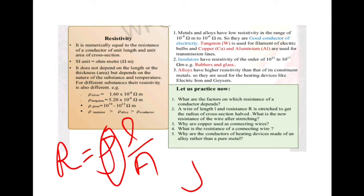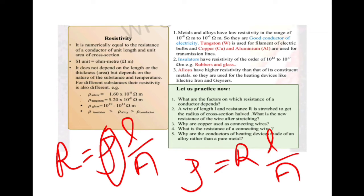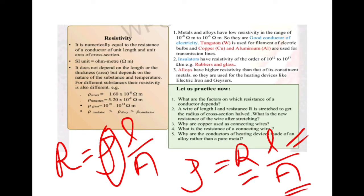When we write the resistance formula, R equals rho L by A. So rho equals R times A divided by L. This means resistivity is numerically equal to the resistance of a conductor of unit length and unit cross-sectional area of 1 meter square.